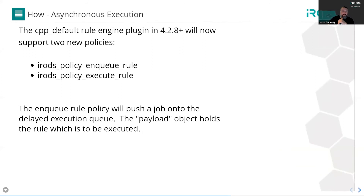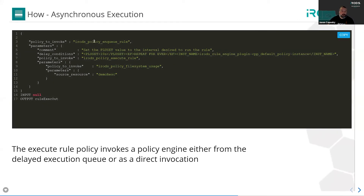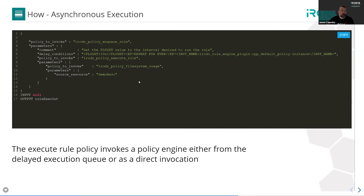We have the ability to enqueue a rule and execute a rule, which gives us the ability to reach into the asynchronous behavior of IRODS. These two policies are supported by IRODS 4.2.8 and 4.2.9 in the C++ default rule engine plugin. This gives us the ability to remove Python, remove any interpreter from the system, and run everything at C++ speed if that's how we want our deployment configured. To set up asynchronous execution, we call the policy enqueue rule with some delay conditions, then once the rule fires we execute a rule — for example, tripping our filesystem usage policy engine looking at a source resource named demo risk. This could be either delayed execution or direct invocation.